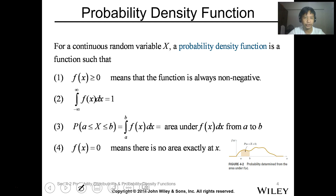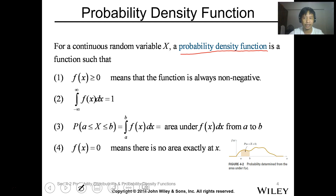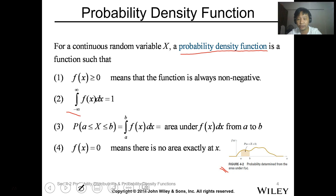For a continuous random variable, the function that represents values is called the probability density function. The probability density function has the following properties: f(x) is always greater than or equal to zero, meaning the function is always non-negative. The integration of this value from negative infinity to positive infinity is equal to one — meaning if you take the area under the curve, it equals one. This is an example of a probability density function — you can see the area under the curve equals one.